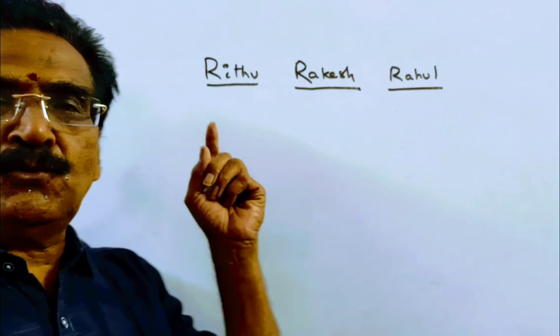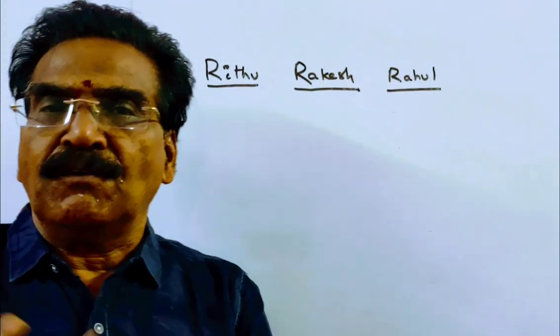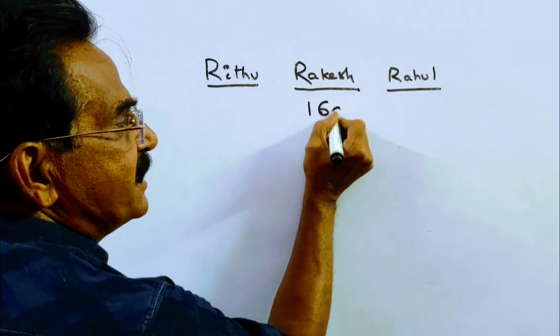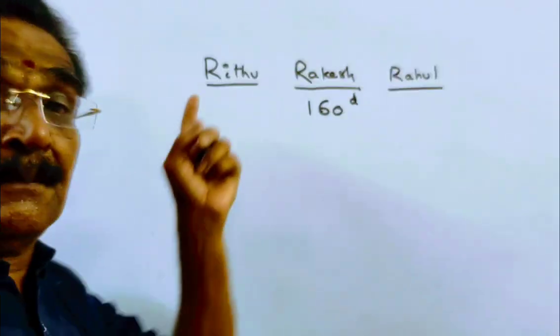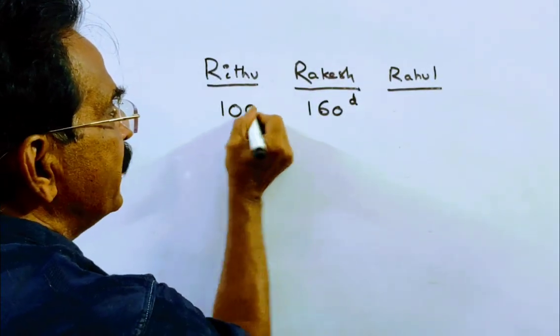See friends, Ritu is 60% more efficient than Rakesh. What does it mean? The work done by Rakesh in 160 days can be done by Ritu in 100 days only. It can be done by Ritu in 100 days.